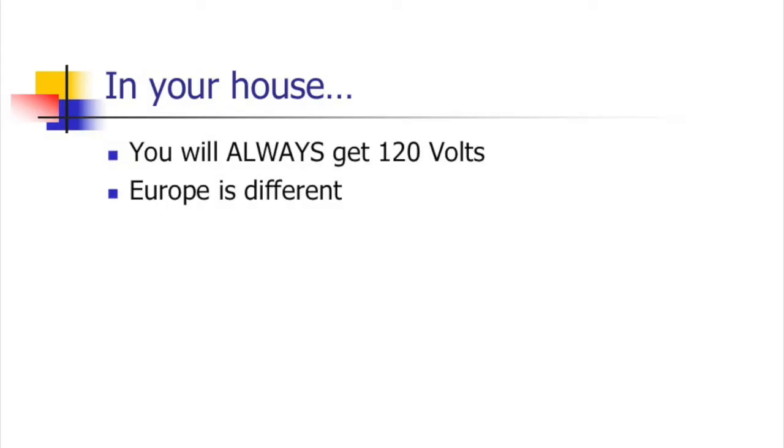To remind you: in the USA you always get 120 volts AC. If I give you a problem where something is plugged into a wall, use 120 volts as the voltage. Other batteries or power supplies could have different voltages. Also, Europe uses a different voltage, which is why you need a power adapter when traveling. Your dryer runs on a different voltage — doubled up to about 240 volts.